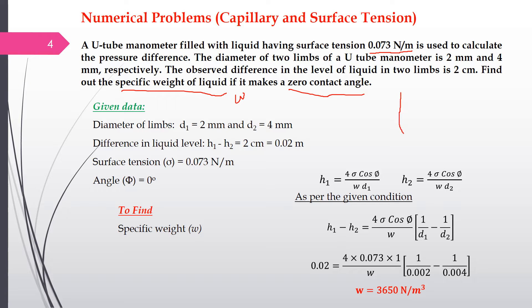A U-tube manometer is used to measure the pressure difference between two points, labeled 1 and 2. The diameter of tube one is 2 mm and tube two is 4 mm. The observed difference in the liquid levels in the two limbs — since the manometer measures pressure difference — is 2 centimeters as per the given question.